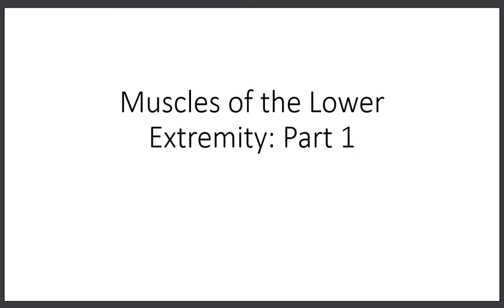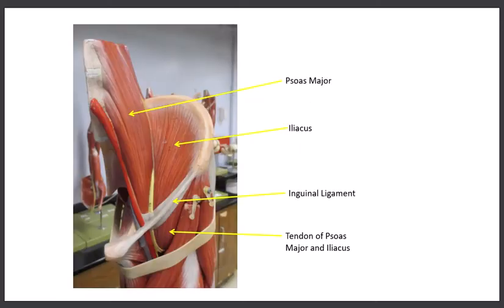In this lab we'll be discussing the muscles of the lower extremity. We're still on our muscle checklist for the practical — we'll be in our fourth column now, the column all the way to the right. We'll begin with the muscles of the upper thigh, the pelvic area, and then we'll finish up with the muscles of the leg. Let's take a look at the muscles coming from the pelvic area and the upper thigh.